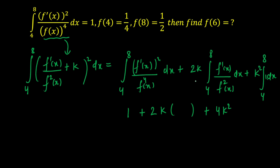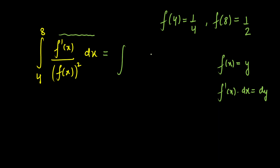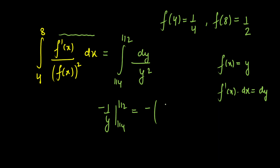Now let's evaluate the middle integral. We have f'(x) and f(x) present, so substitute f(x) = y, giving f'(x)dx = dy. The integral becomes ∫dy/y², with limits changing to y = 1/4 (lower) and y = 1/2 (upper). Integrating gives [−1/y] from 1/4 to 1/2, which equals −2 + 4 = 2. So this integral equals 2.